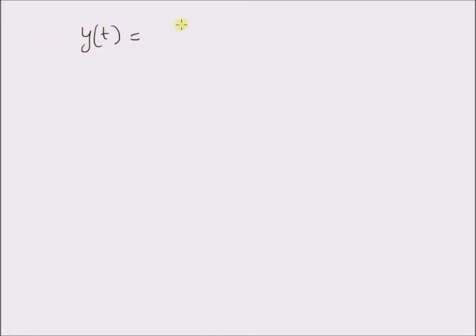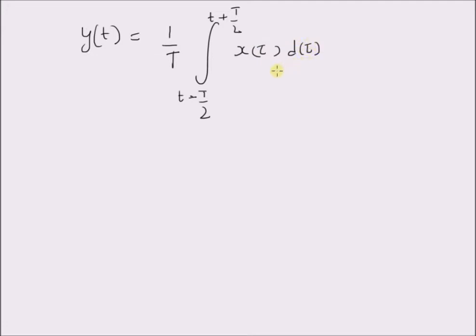Given the system equation y(t) = 1/T * integral from t minus T/2 to t plus T/2 of x(tau) d tau. From the definition, we can clearly see that the system is basically finding an average of the input between the interval t minus T/2 to t plus T/2.